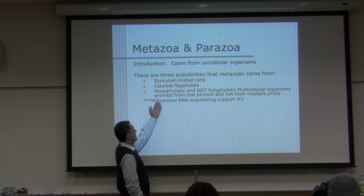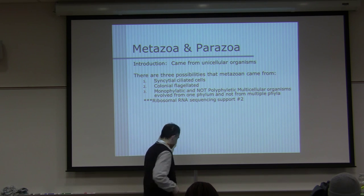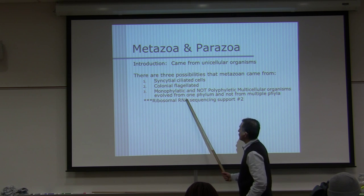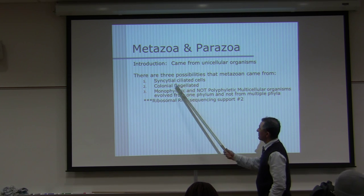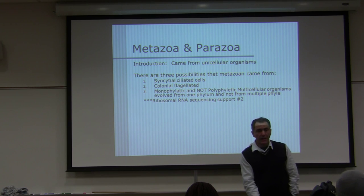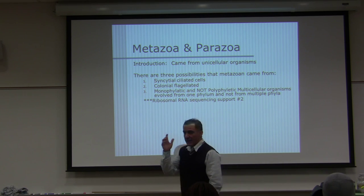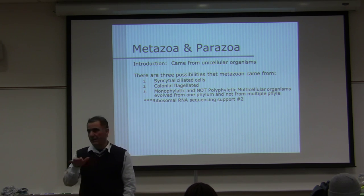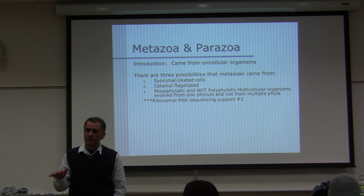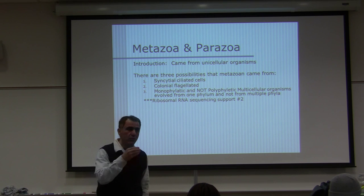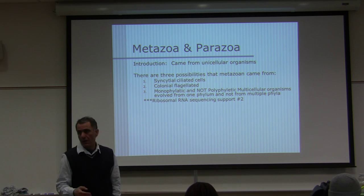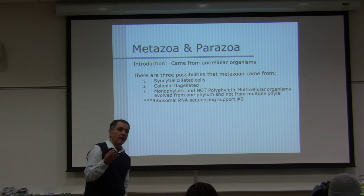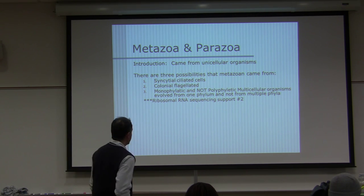Out of these three theories, scientists believe the second one — colonial flagellated — is the most accepted. Ribosomal RNA sequencing supports number two. They use RNA first for similarities, and if the RNA is very close, they move on to rRNA. In Bio 1 we studied the three types: RNA, rRNA, mRNA, and tRNA.